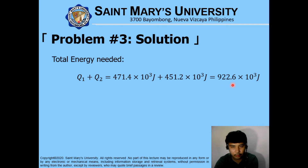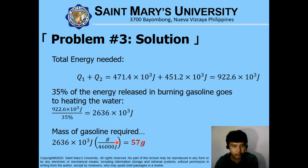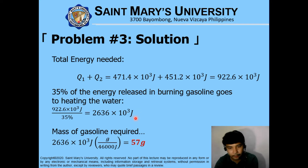With only 35% of the energy from burning gasoline going to heating, we divide 922.6 times 10 to the 3 joules by 35%, arriving at 2,636 times 10 to the 3 joules of total energy needed. Using the conversion factor of 1 gram of gasoline equivalent to 46,000 joules, the mass of gasoline required is only 57 grams. With that amount of gasoline, we could boil the water and let it evaporate.